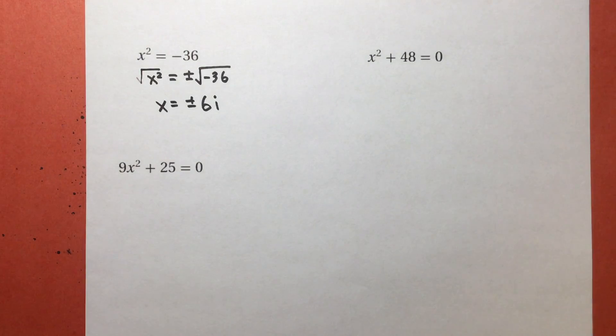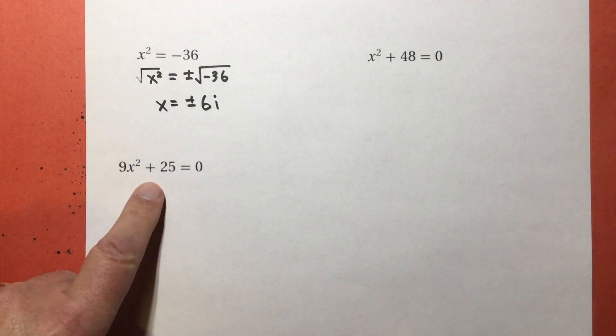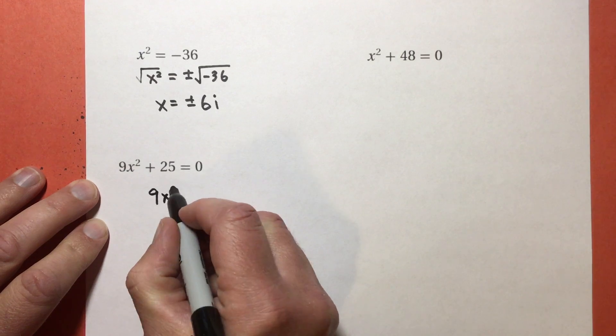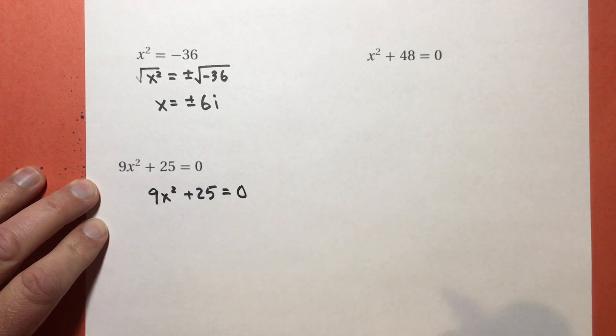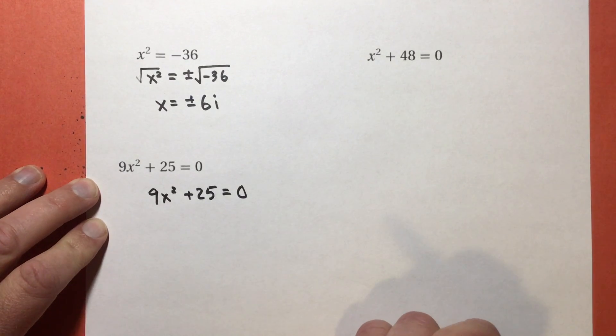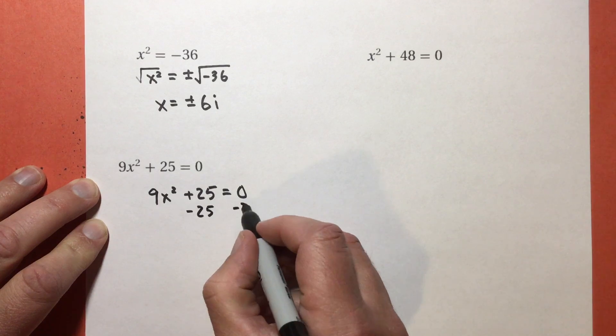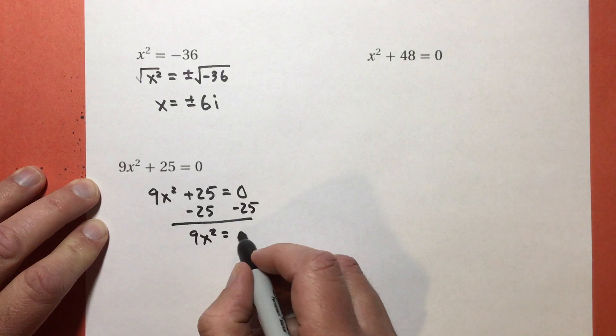Now that's a lot of perfect squares. As a matter of fact, I'm gonna skip and do this one. I'll save that one for the last. I'm seeing a lot of perfect squares all over the place. 9x² + 25 = 0. 25 and 9 are both perfect squares. I wonder what's gonna happen.